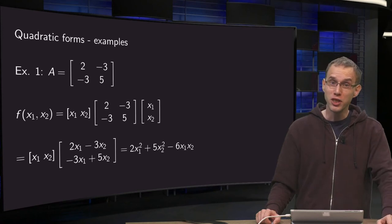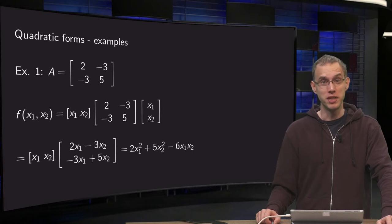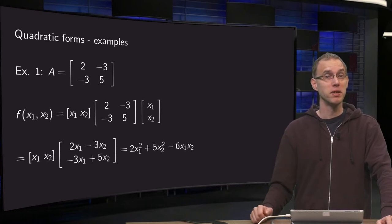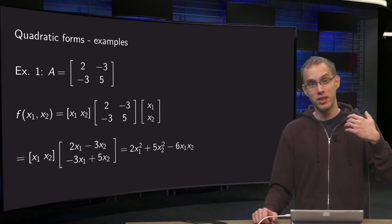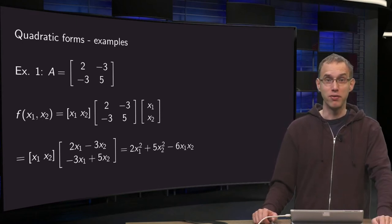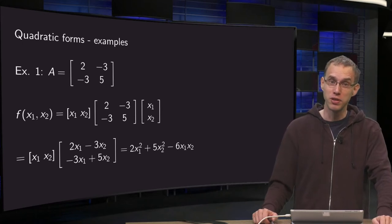Quadratic forms are functions that can be rewritten as x transpose times A times x, where A is a symmetric matrix. Given the matrix A we can find the quadratic form, and given the quadratic form it is also easy to find the matrix, as we will see in the examples in this video.